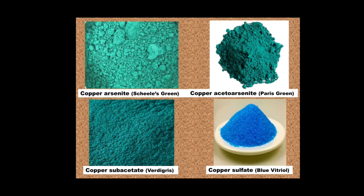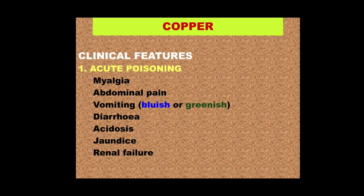With regard to poisoning, if there has been acute ingestion of excess of any of these derivatives, there can be manifestations like muscle pain (myalgia), abdominal pain with vomiting — and the vomitus is characteristically bluish or greenish. An important point: don't confuse it with bile, which looks slightly greenish. Here it is quite distinctively green or blue depending on the salt. There is also diarrhea, severe acidosis, liver damage with jaundice, and renal failure.